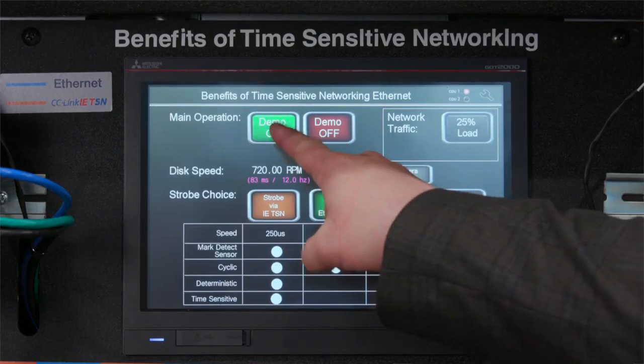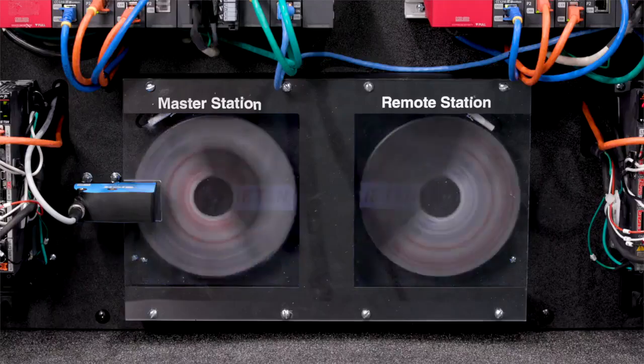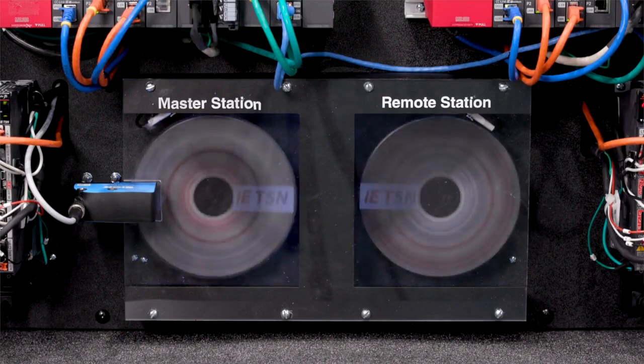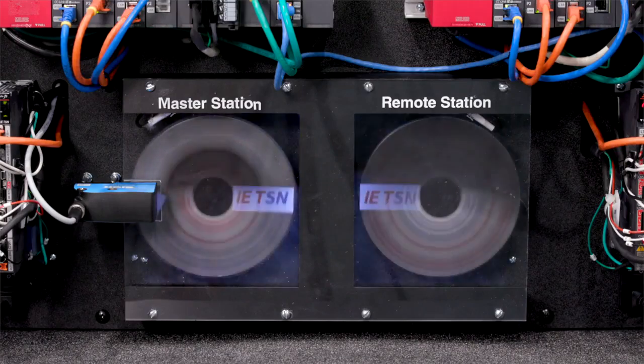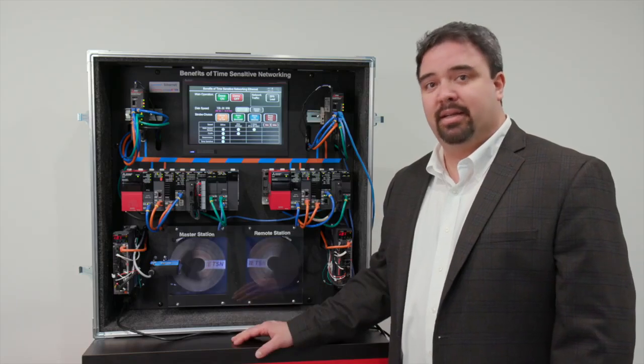I'm going to turn the demonstration on and we're going to start out in CC-Link IETSN mode. As you can see, we can clearly see both TSN logos and they're identical. That's the benefit of a deterministic network. CC-Link IETSN is deterministic.